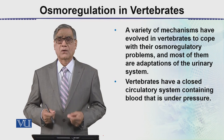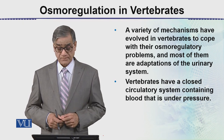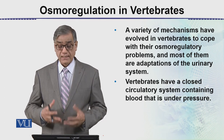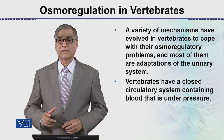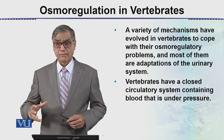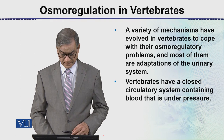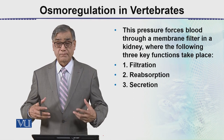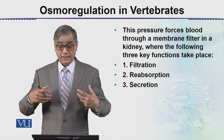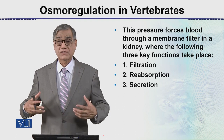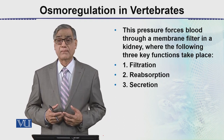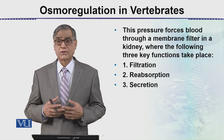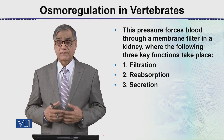Osmoregulation is under the control of nerves or under the control of hormones. The vertebrates have a closed circulatory system containing blood that is under pressure — by the throbbing of the heart or by muscular contraction. This pressure forces blood to pass through the membranes, that is usually in the kidneys or in part of the excretory system.